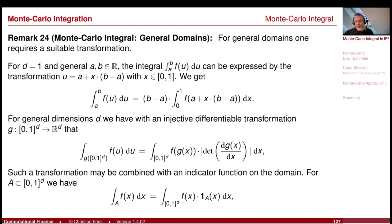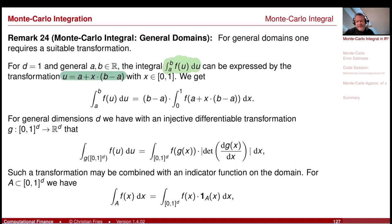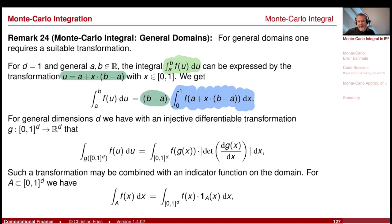If you want to move to a more general domain, you can do this by a coordinate transformation. So if you have the integral from a to b of f of u du, you would use a coordinate transformation u equals a plus x times (b minus a), so that x is between 0 and 1. Then you get the integral we had before, just with the length of the interval as a factor.